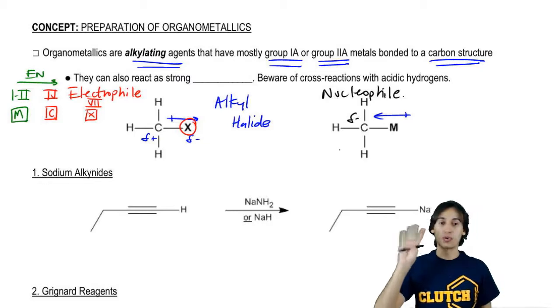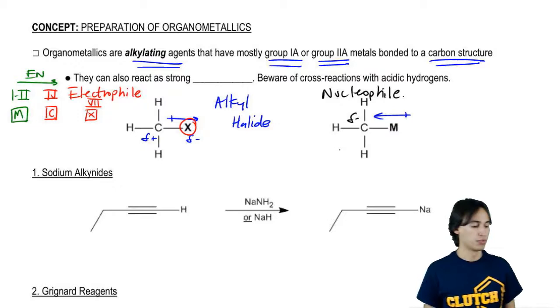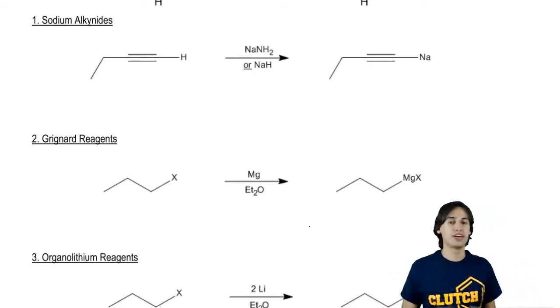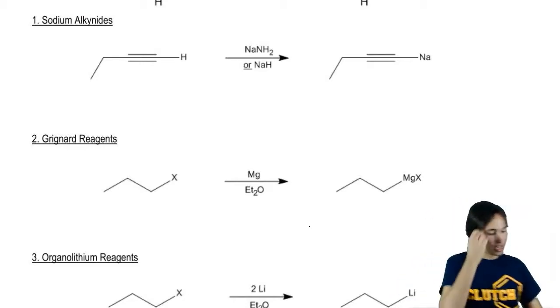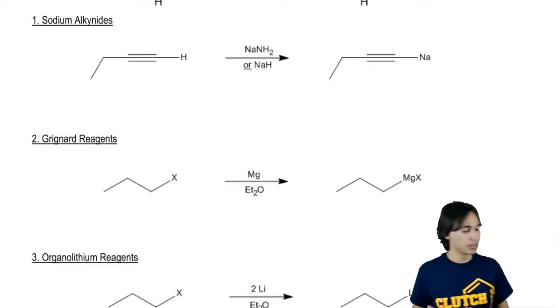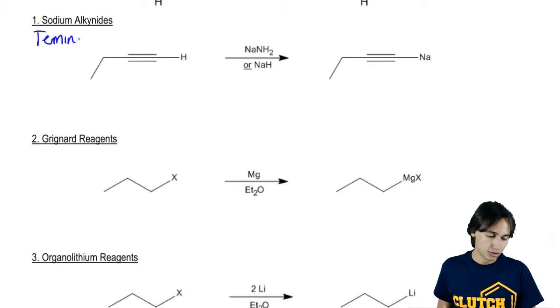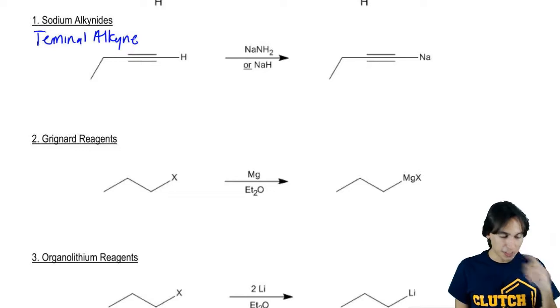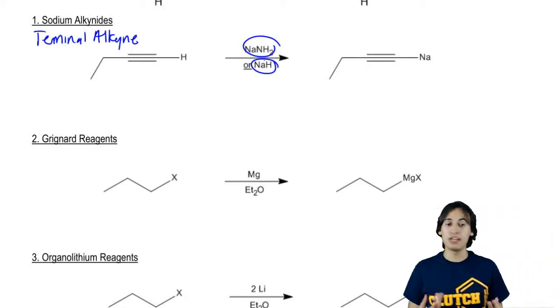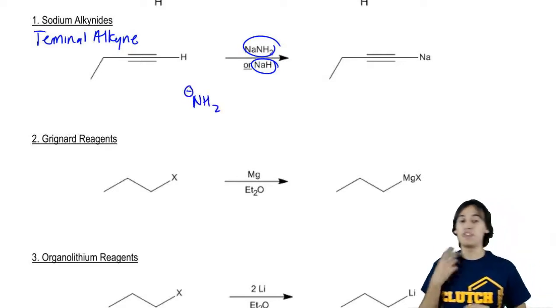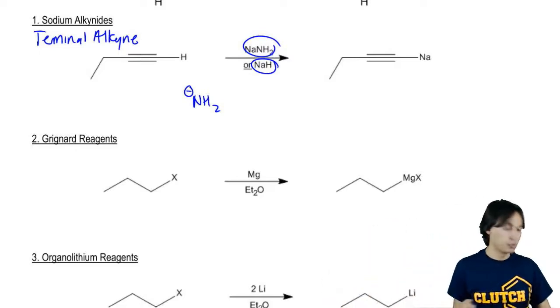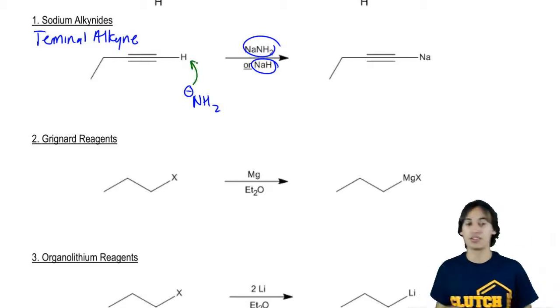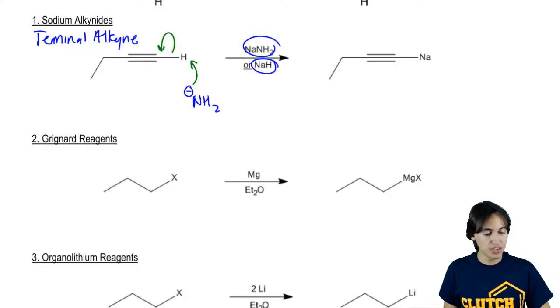So there's four types of organometallics that you guys will be responsible for, there's four types that you need to know, and they're commonly talked about in organic chemistry. So the first one is sodium alkanides. These are the easiest type because most likely, if you've been doing your homework, you've already seen one of these at least in another chapter. So the way that organometallics work is we usually use a terminal alkyne to react with a strong base.